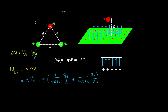If we simplify this, the work done by the external agent is equal to Q over 4π epsilon-zero, multiplied by 1 over D, and that's multiplied by Q1 plus Q2.